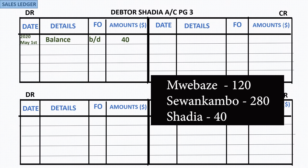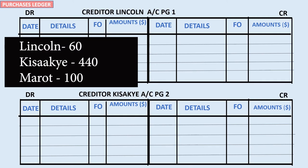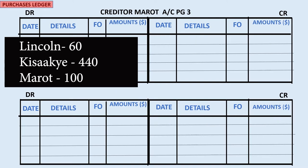We also have creditors accounts with balances from the previous session. Creditors accounts are liability accounts, and liability accounts have credit balances. Lincoln has a balance of $60, so we post $60 on the credit side of the Lincoln account as a balance brought down on the 1st of May. Similarly, Chisache has a balance of $440 brought down on the first of May. The other creditor is Marot with a balance of $100, also a balance brought down from the previous session.